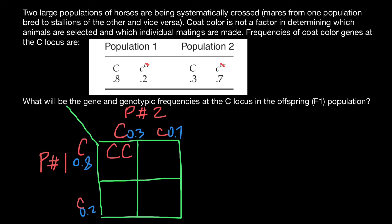The frequency of the homozygous dominant genotype in the F1 generation is going to be 0.8 times 0.3, giving us a frequency of 0.24. In the next cell, we have a heterozygous genotype where the dominant allele C comes from population one, and the recessive allele c comes from population two with a frequency of 0.7. So we multiply 0.8 by 0.7, giving a frequency of 0.56.